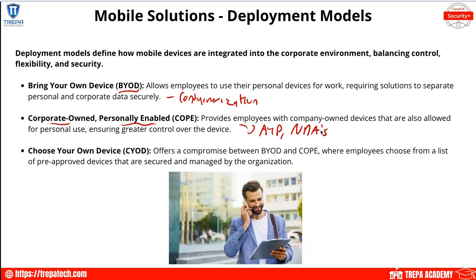Choose Your Own Device (CYOD) offers a compromise between BYOD and COPE, where employees choose from a list of pre-approved devices secured and managed by the organization. We can say, here are LG, Samsung, or iPhone options — you choose. Or we could say, go buy a phone of your choosing, we'll pay the stipend and cover the cost, but it's a work phone. Two different ways to implement CYOD.